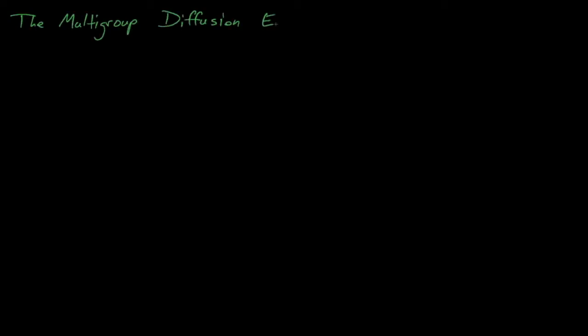Hello everyone, and welcome back to Nuclear Reactor Theory Lectures. So far we've discussed the diffusion equation only in its one-group form. We have discussed how to apply boundary conditions to the diffusion equation, how to use the geometric and material bucklings to find critical masses, the shape of the flux spectrum and other eigenmodes according to the diffusion equation, and even how to solve the diffusion equation using finite element methods.